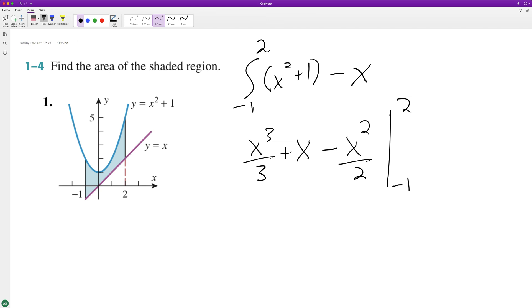When we plug this in, starting off with two, eight over three (two cubed) plus two, minus four over two which is two, so these cancel out.